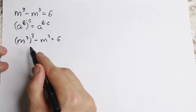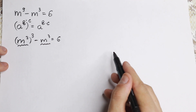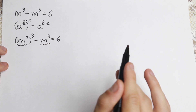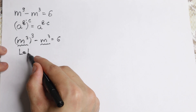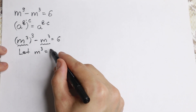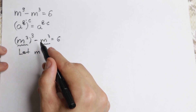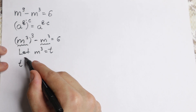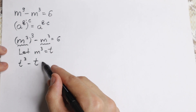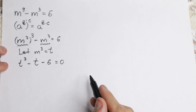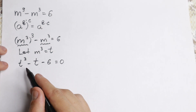Right here we have m cube, and right here we have m cube. We can work with this using substitution, because m cube is hard to work with directly. So let m cube equal t. Then our equation becomes t cube minus t, and bringing the 6 to the left-hand side: t cube minus t minus 6 equals 0. We've reduced the 9th power equation down to a 3rd power, a cubic equation.